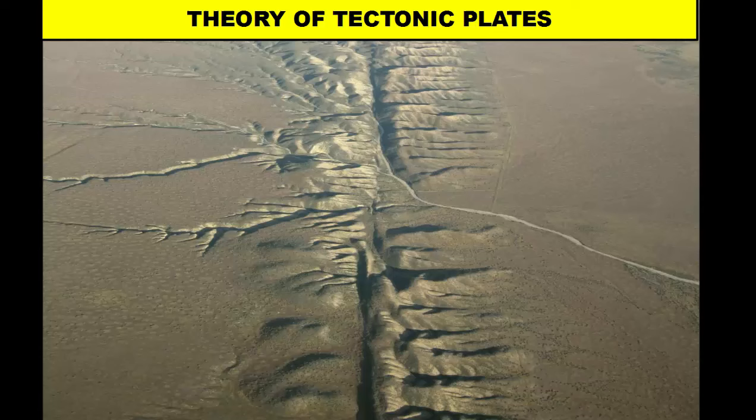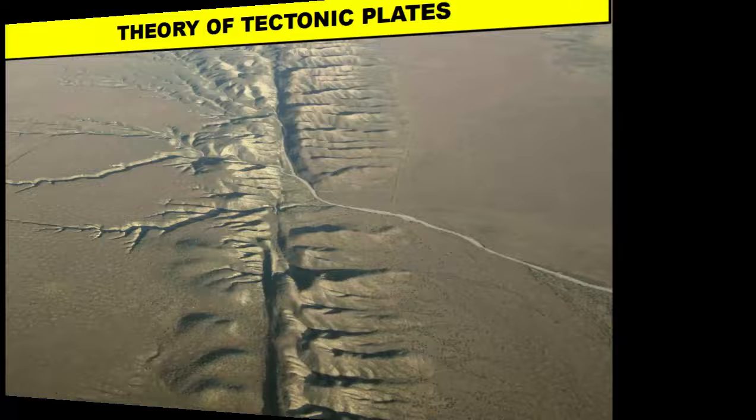Welcome to our lesson on the theory of tectonic plates. In the previous two lessons we discussed two things: the theory of continental drift and the process of seafloor spreading. In continental drift, Alfred Wegener suggested the continents were once together as one super landmass and have drifted apart, but he couldn't explain how. Scientists then discovered seafloor spreading, in which mid-ocean ridges created new crust, pushing older crust away and pushing the continents apart. Because of these two discoveries, we've now come up with the theory of tectonic plates.